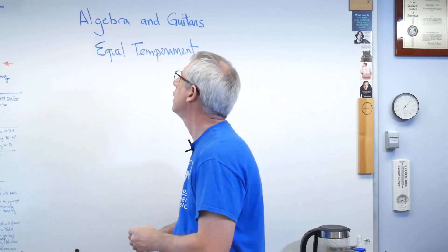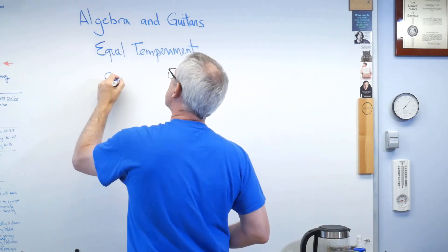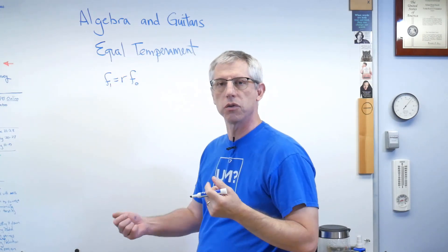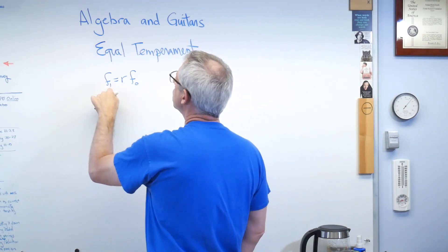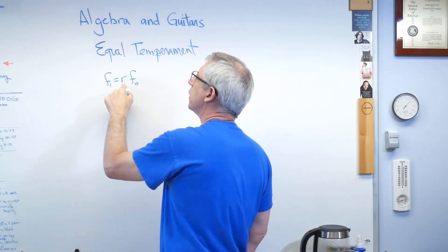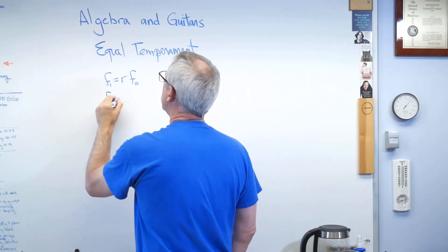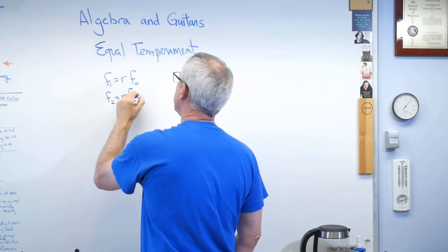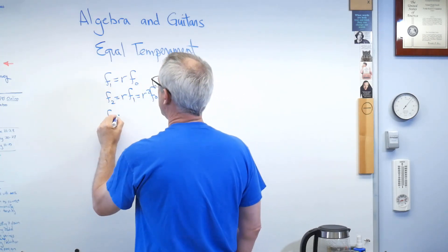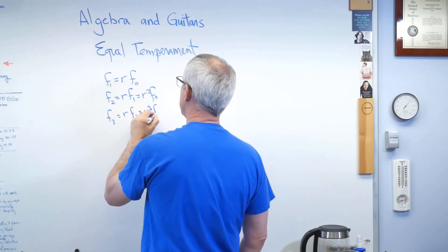And, so I can say that the frequency of a note is some ratio times the frequency of the fundamental, maybe the string that's open where I'm not pushing down at all. So, this is the note at the first fret. There's the note of the open string. There's the note of the first fret. There's the ratio of the two. That means F2 is R times F1, and that's R squared times F0. And F3 is R times F2, and that's R cubed times F0.